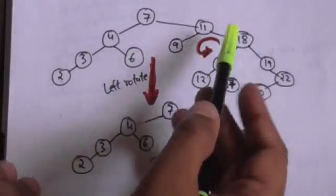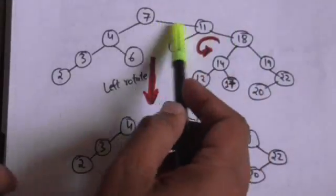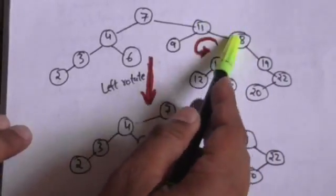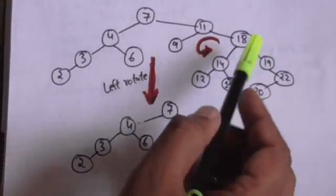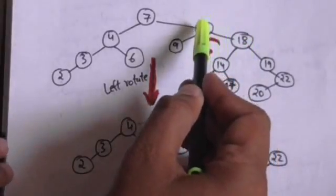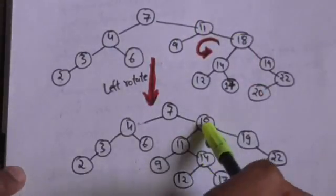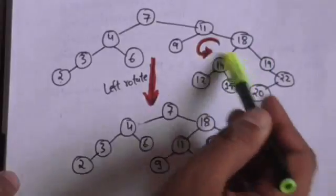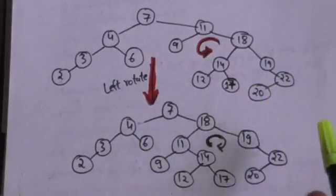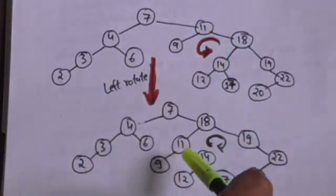Now with a concrete example: suppose we have to do a left rotation on node 11 of this binary search tree. When we do left rotation on node 11, its right child — node 18 — will take the place of node 11. Node 11 will become the left child of node 18, and the left child of node 18 will become the right child of node 11.